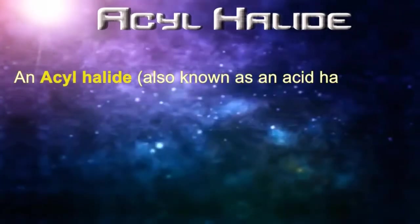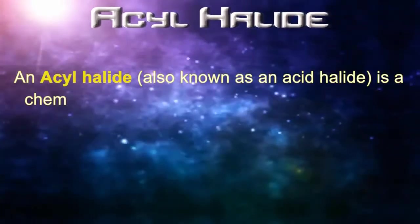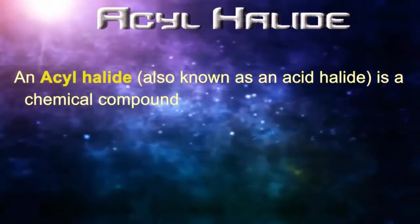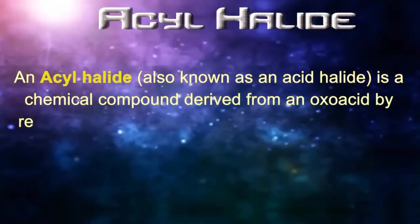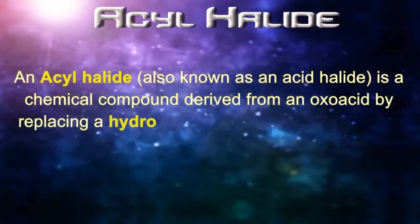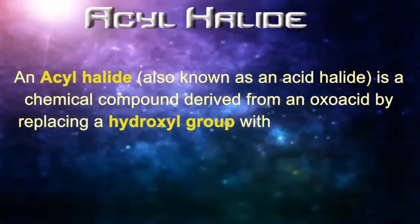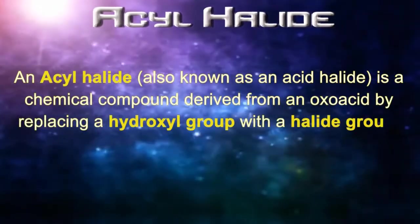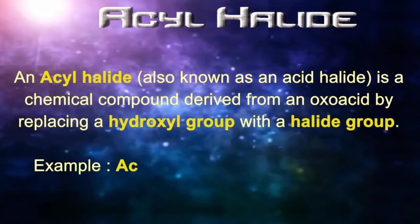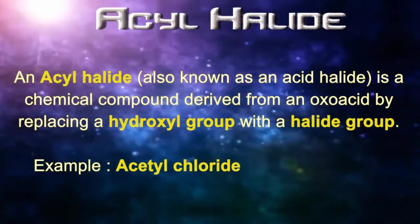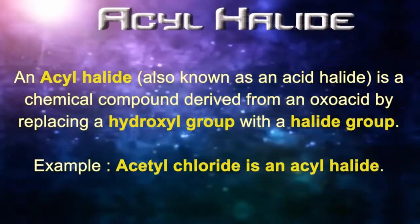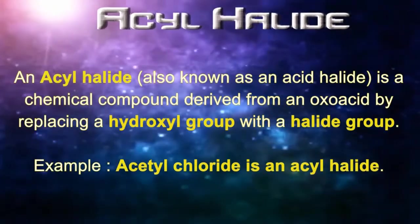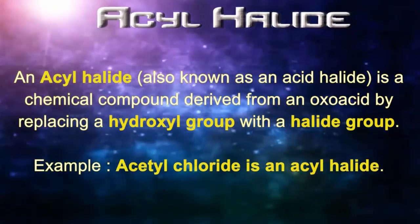Acyl Halide. An acyl halide, also known as an acid halide, is a chemical compound derived from an oxoacid by replacing a hydroxyl group with a halide group. Acetyl chloride is an acyl halide.